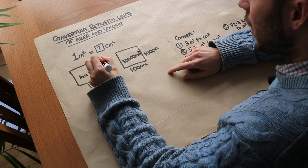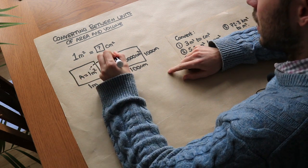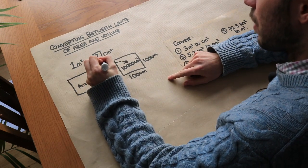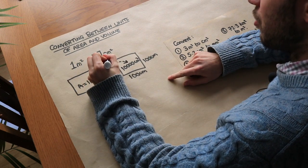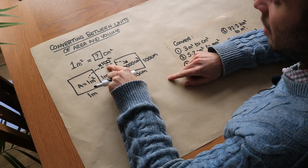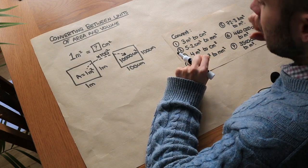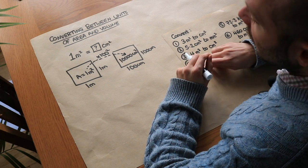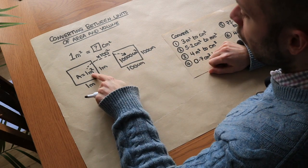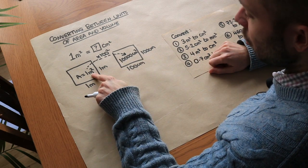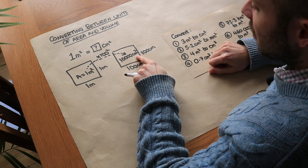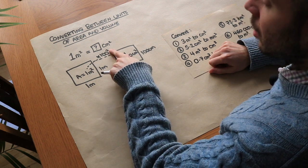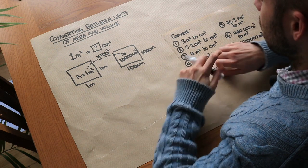So we don't multiply by a hundred to get from metres squared to centimetres squared — we actually multiply by a hundred squared. One times a hundred squared gives you ten thousand centimetres squared. And it would be exactly the same going from one metre cubed to centimetres cubed: we would multiply by a hundred cubed instead of a hundred squared.